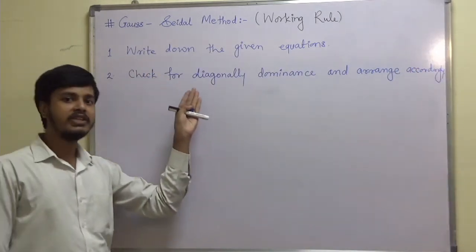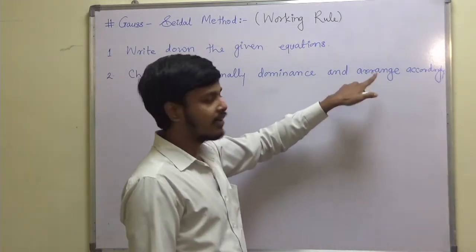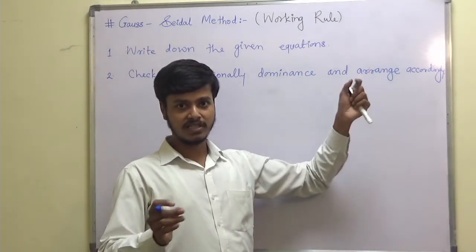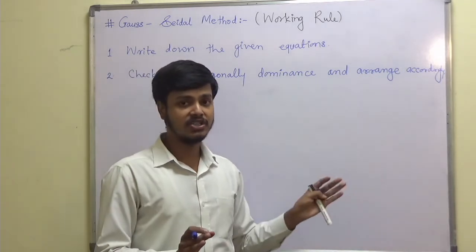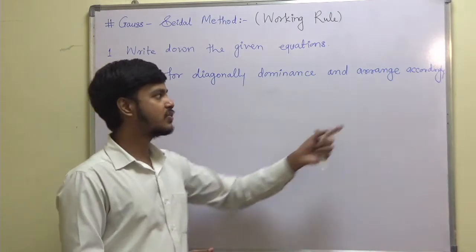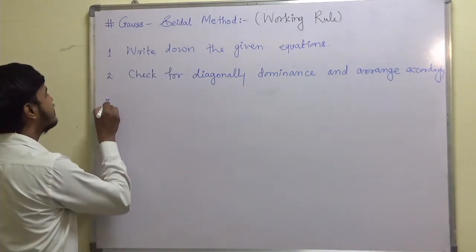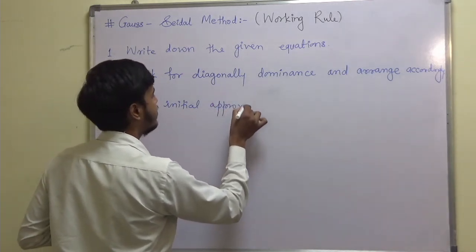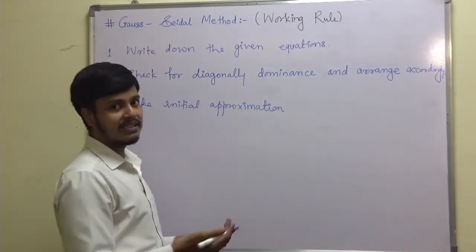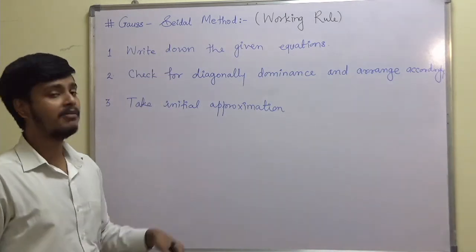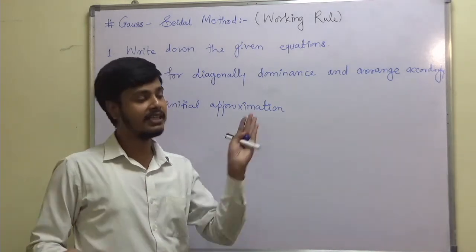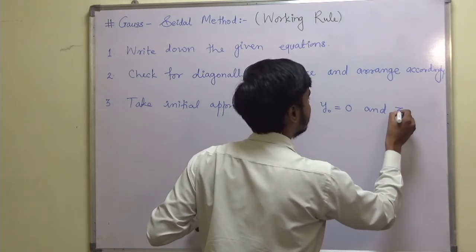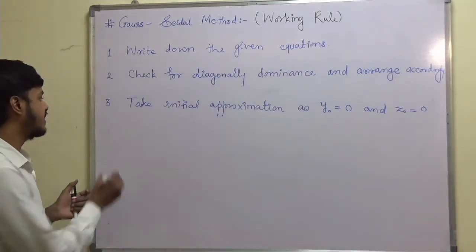Once you have written the equations, you need to check whether it is diagonally dominant or not, and if it is, arrange the equations. Sometimes equations are already arranged; sometimes not, so you need to arrange them. If the equations given in the problem are already arranged, no need to rearrange. But sometimes there is a jumble of equations, so you need to arrange them. Step 3: take initial approximations — y₀ equal to 0 and z₀ equal to 0. This is an iterative method, unlike the other three methods, and that is the key difference.